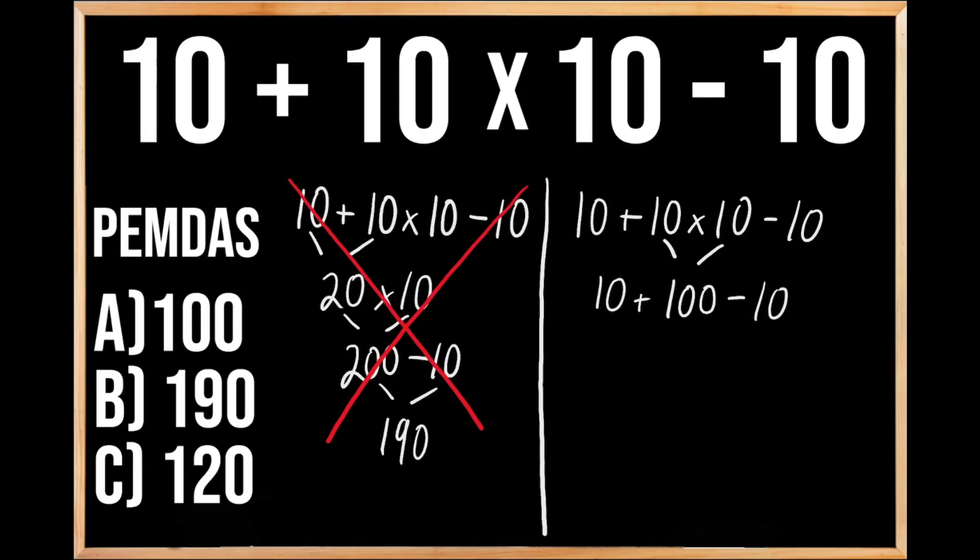Since we don't have any more multiplication or division to deal with, we're going to move on to our last priority of adding or subtracting. And here, since we're going to be adding 10 and we're going to be taking away 10, they're going to cancel each other out. So that means our answer is going to be 100. So our answer is A, 100.